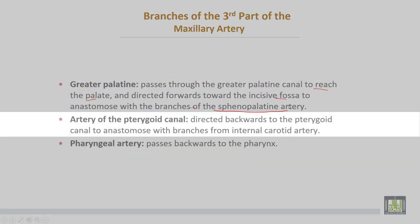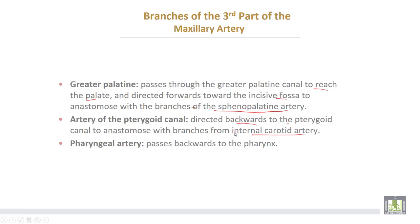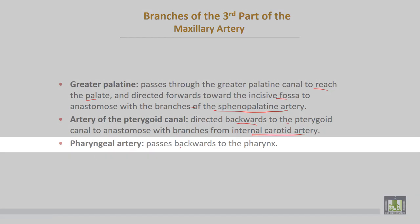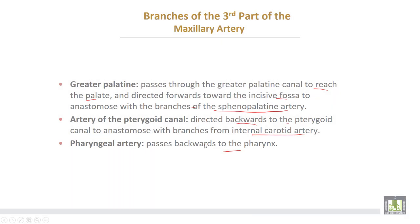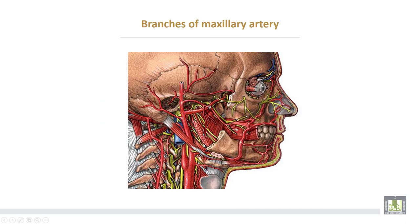The artery of the pterygoid canal is directed backwards through the pterygoid canal to anastomose with branches from the internal carotid. The pharyngeal artery passes backwards to the pharynx. This diagram shows the branches of the maxillary artery, including the inferior alveolar, middle meningeal, and various other branches.